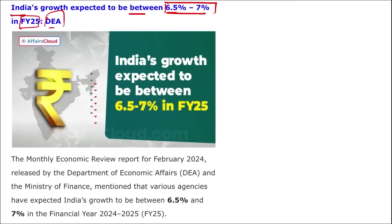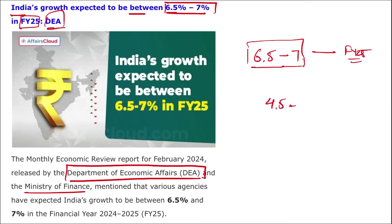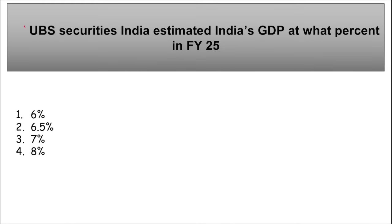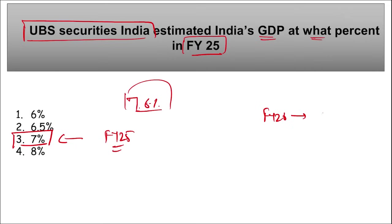Next: India's growth is expected to be between 6.5% to 7% in fiscal year 2025 as per data released by the Department of Economic Affairs under the Ministry of Finance. The inflation data states inflation will be between 4.5% to 5.2%. UBS Securities India estimated India's GDP at 7% in fiscal year 2025, reduced from an earlier projection of 7.6%. For fiscal year 2026, India is expected to grow by 6.8%.